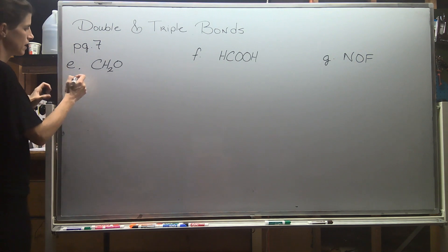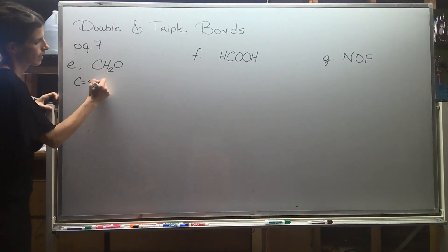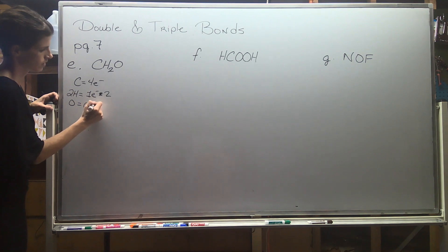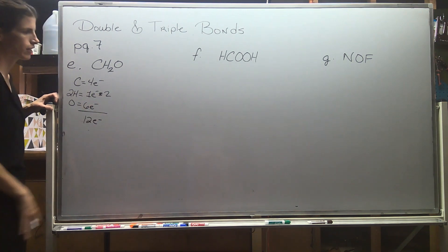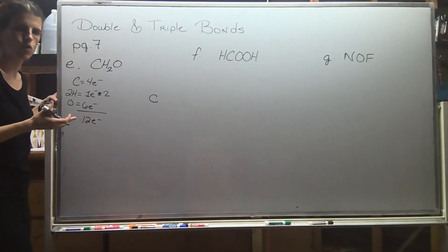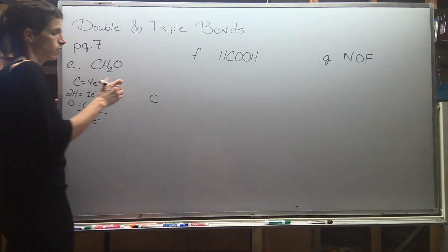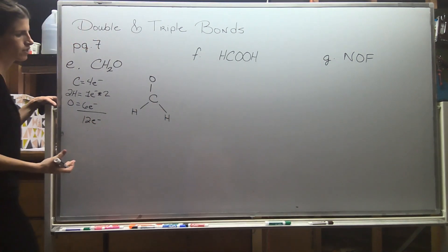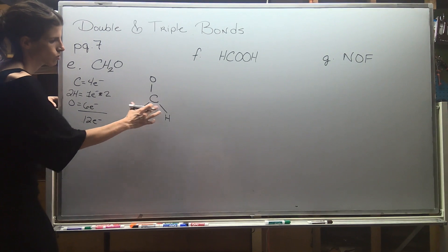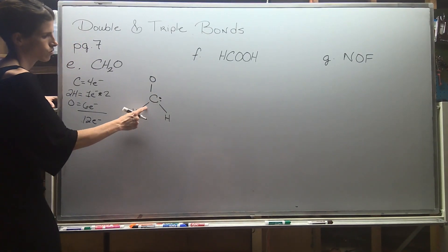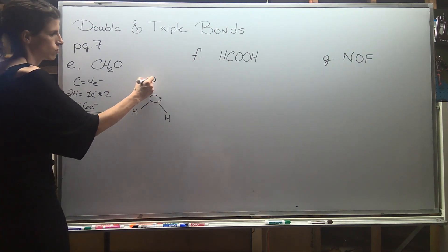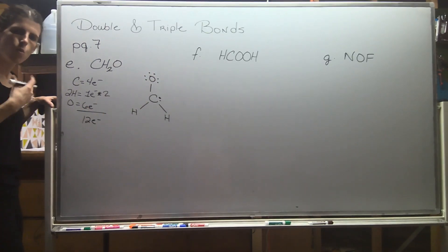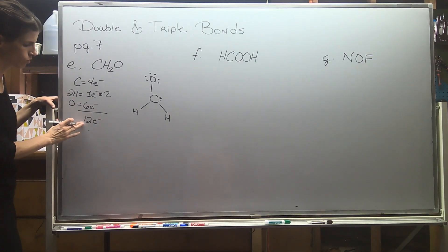Some more practice. Starting with the electron math: carbon gives four electrons, two hydrogens give two, oxygen is in group six. We have a total of 12 electrons. Carbon will be my central atom because it's the least electronegative. I'll attach oxygen and hydrogen, then try to satisfy the octets. Carbon currently has two, four, six — so it needs a lone pair to get to eight. Oxygen just has two, so I'll add six more electrons.